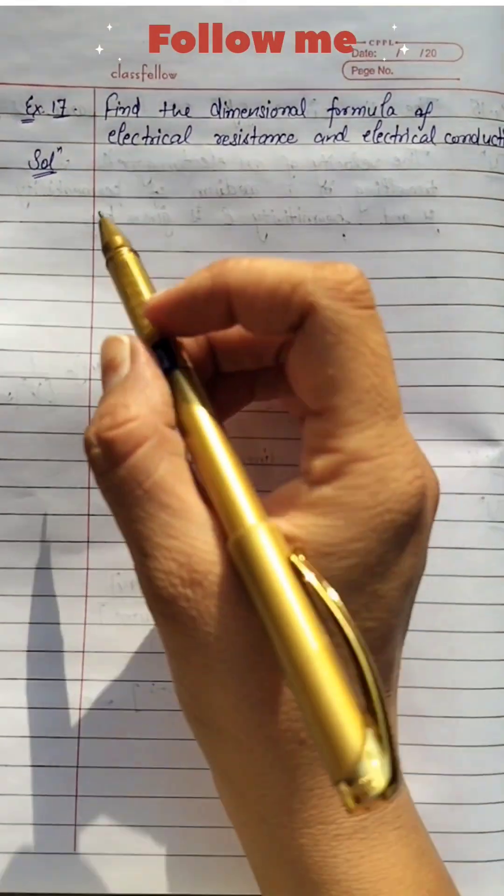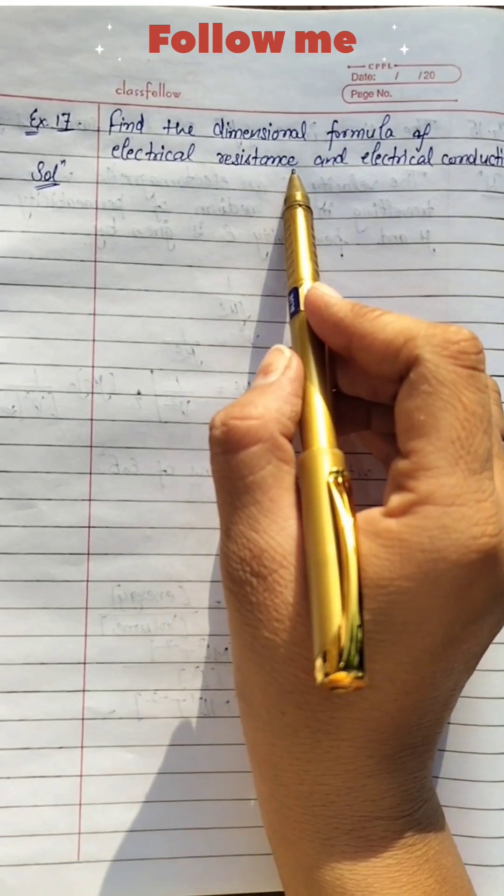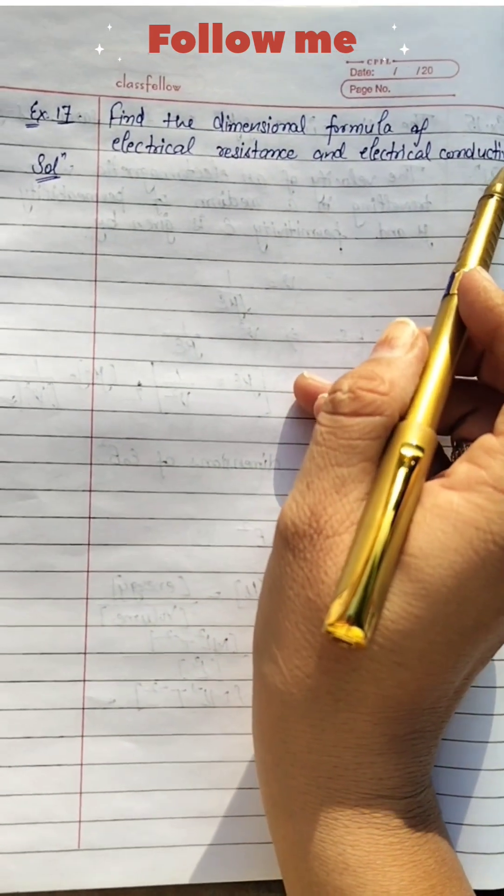Here we will discuss example number 17. Find the dimensional formula of electrical resistance and electrical conductivity.